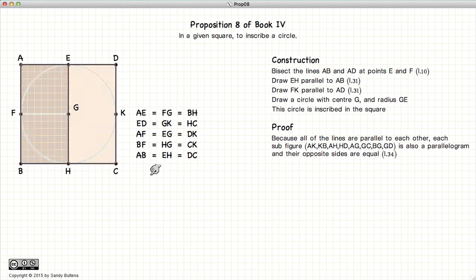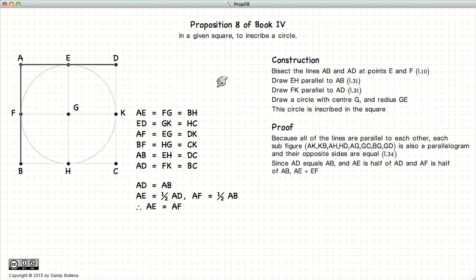And if we look at the horizontal parallelograms, we get AD is equal to FK is equal to BC. And since this is a square, AD is equal to AB.